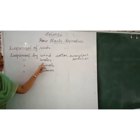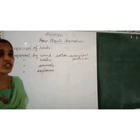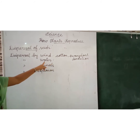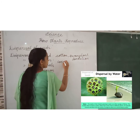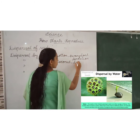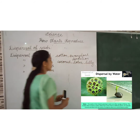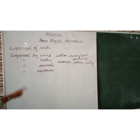Next is dispersal by water. These seeds are very spongy and through the water they will be scattered. The seeds are scattered through the water. For example: coconut, lotus and lily. These seeds have a spongy and fibrous coating.